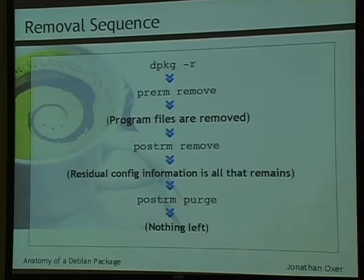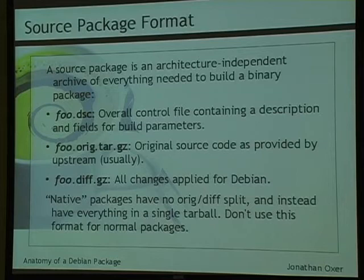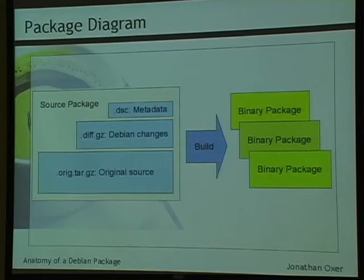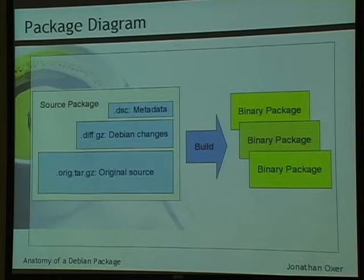Now let's look at a source package. A source package contains the original tarball with unmodified source, the Debian changes applied to that source tree, and the metadata. This gets turned into a binary package with those three equivalent elements we looked at before.